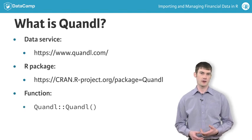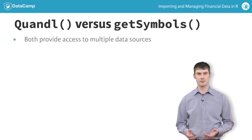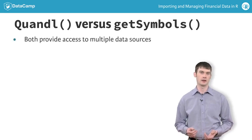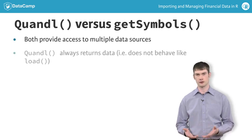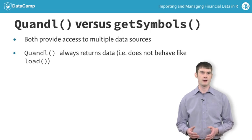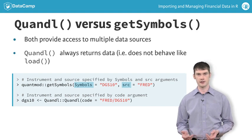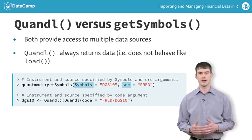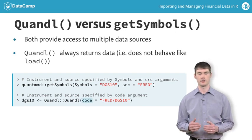So let's compare the Quandl function with Git Symbols. Both functions provide access to multiple data sources. While Git Symbols can create an object for you, the Quandl function always returns the data it imports, so you need to assign that data to an object. And recall that with Git Symbols, you use the symbols and source arguments to specify the instrument and data source. With Quandl, the instrument and data source are specified by one single argument named code.